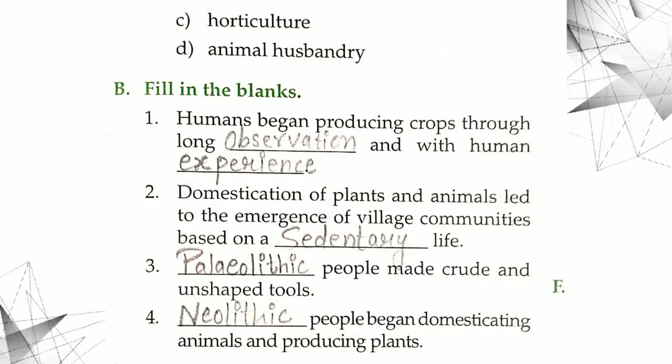Next is fill in the blank. Humans began producing crops through long dash and with human dash. With long observation, O-B-S-E-R-V-A-T-I-O-N, observation, and with human experience, E-X-P-E-R-I-E-N-C-E, experience.